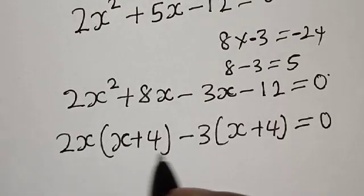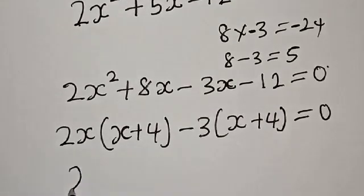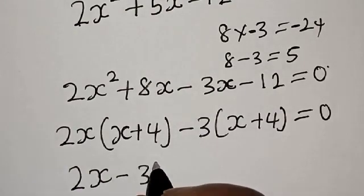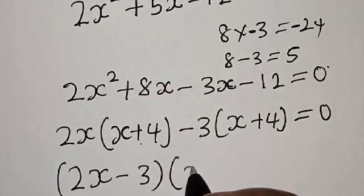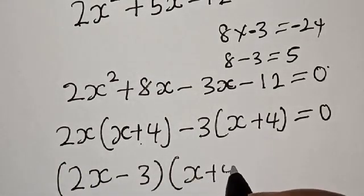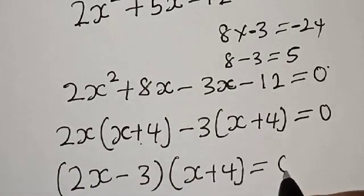Then here is 2x and this is -3. We have (2x - 3)(x + 4) equals 0.